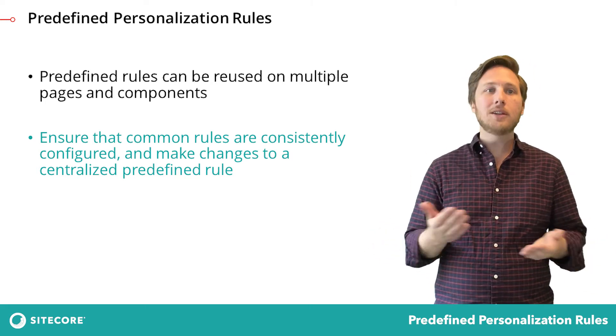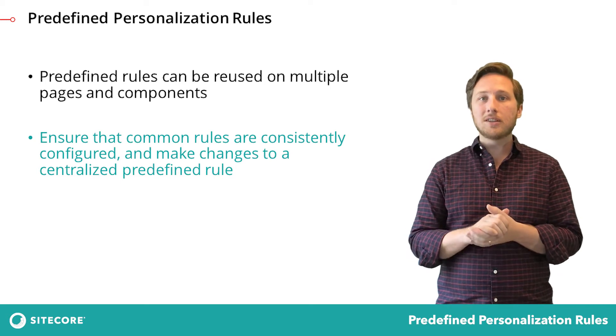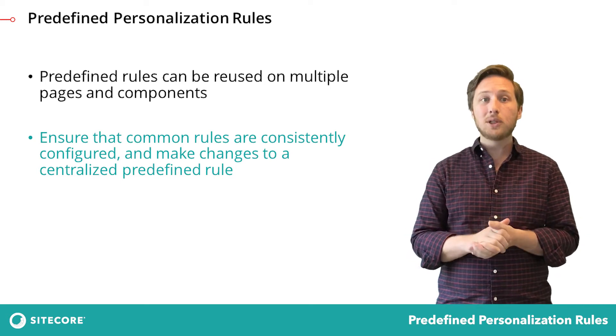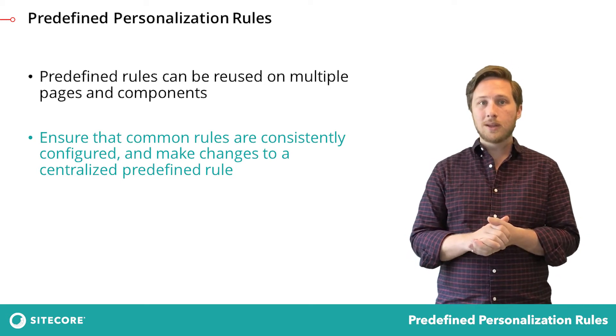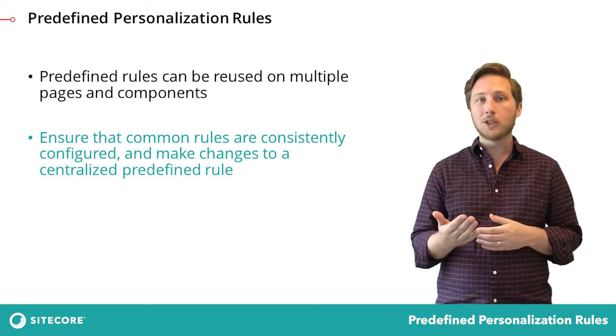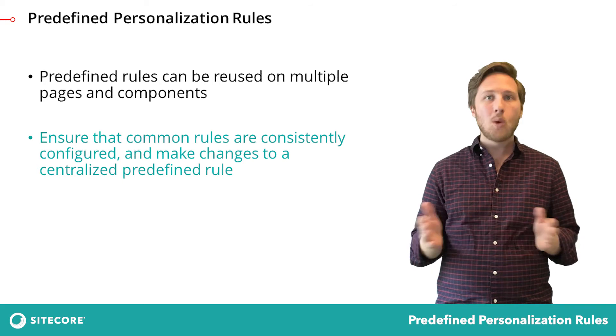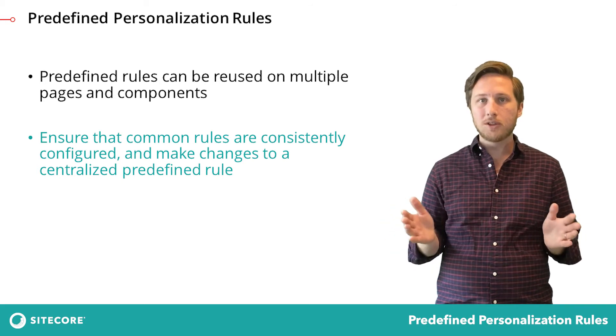Instead, you can just update a centralized predefined rule, and publishing will ensure that changes take effect wherever that rule is used.